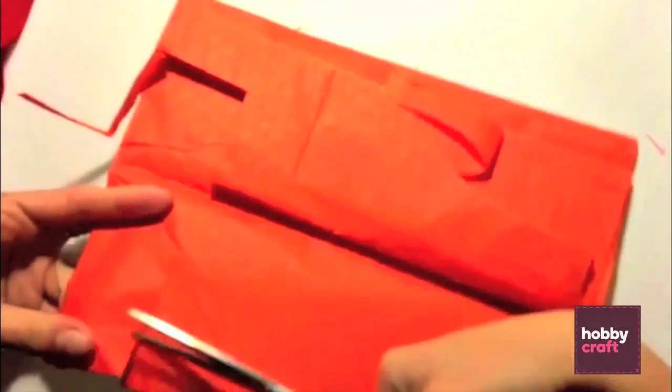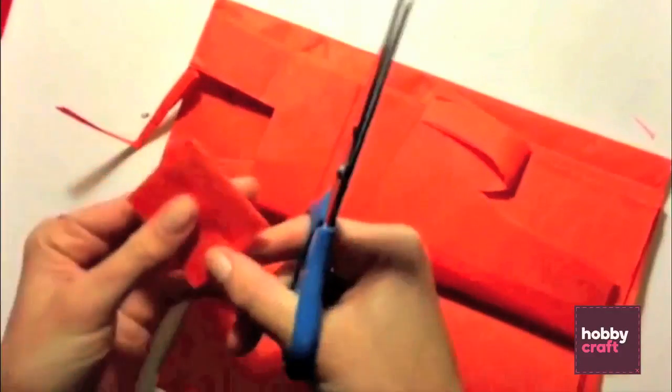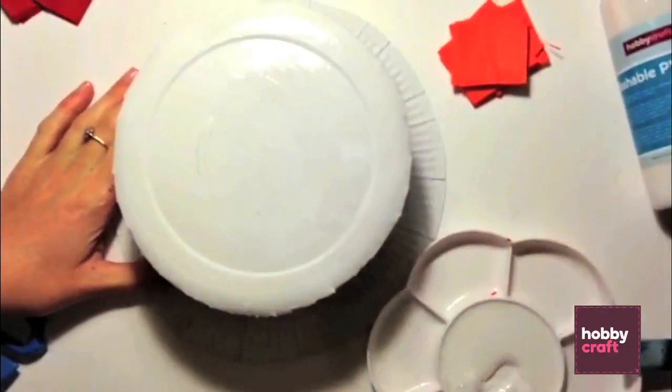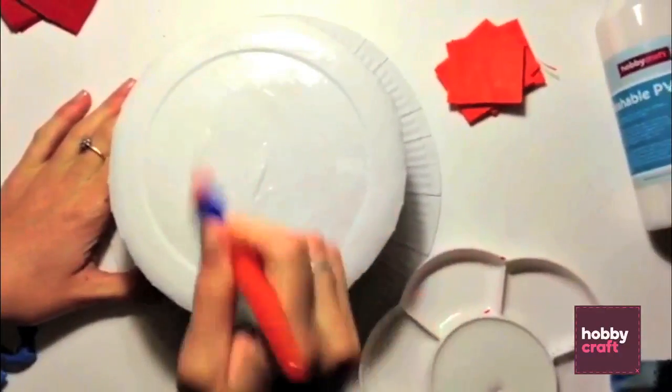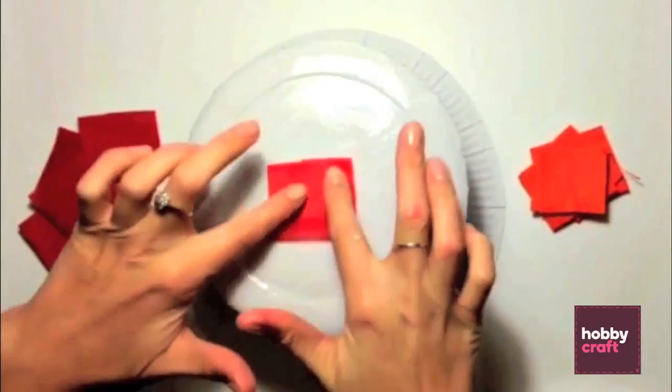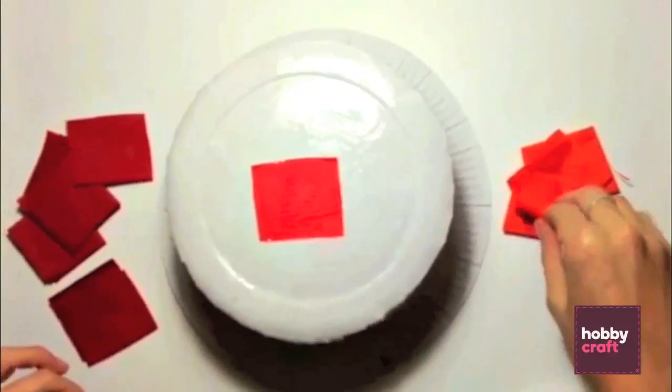Cut out squares of tissue paper in two colours. Apply PVA glue to the whole of the outside of the hat. Lay your tissue paper squares over the hat to decorate. Add another coat of PVA glue to seal the squares in place.